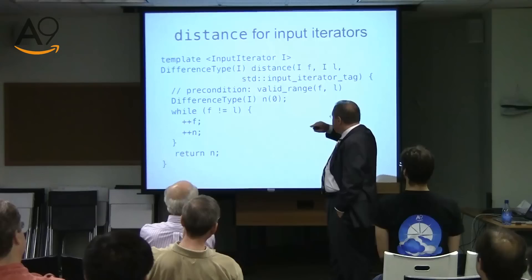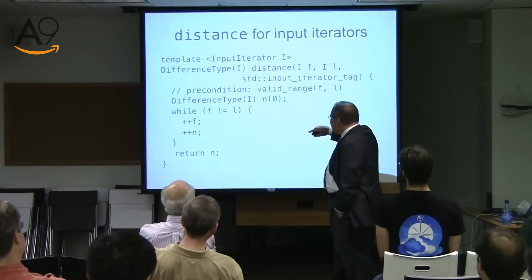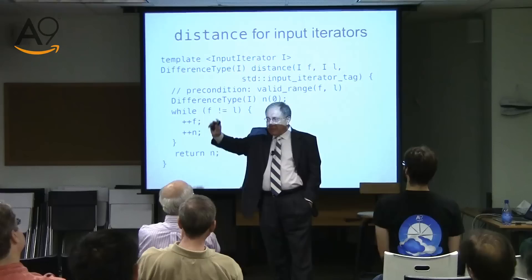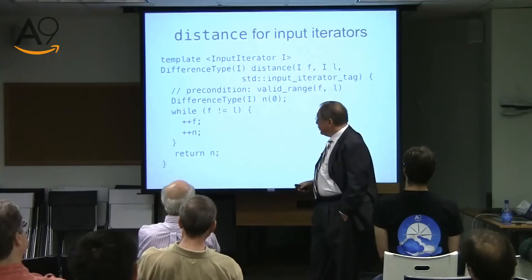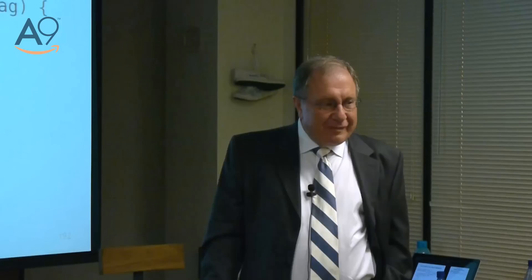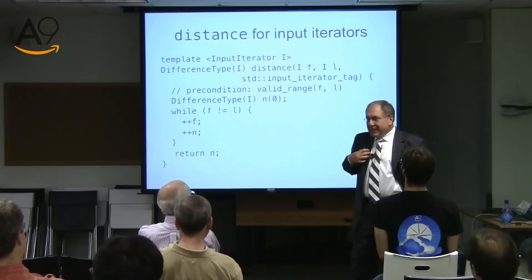Here we use the notion of difference type. Then we do something mysterious when we pass in an iterator tag — let's keep that as a mysterious thing for about five minutes, we will see shortly. Then we write a precondition saying which is a valid range. How do you implement it? That's another mysterious thing we will talk about in a few minutes. But it is nevertheless a precondition — if the range is not valid, the thing will not work.